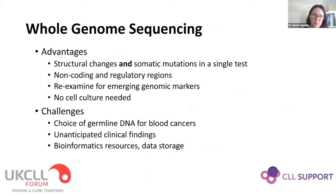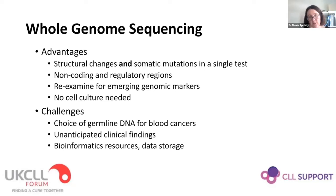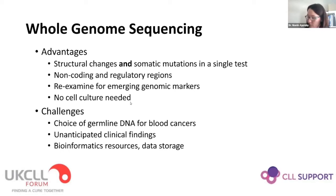Whole genome sequencing offers several advantages: it captures structural changes and somatic mutations in a single test, gives insight into non-coding and regulatory regions, and allows re-examination for emerging genomic markers — so if a sixth target is identified next month, you don't need to redesign your panel. Unlike conventional karyotyping, no cell cultures or metaphases are needed, so you avoid the scenario where CLL cells don't grow well in culture.